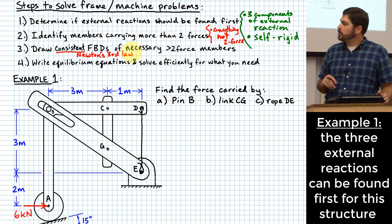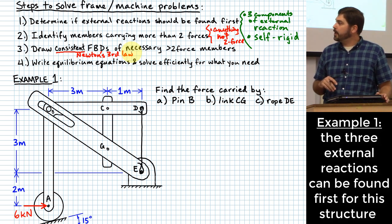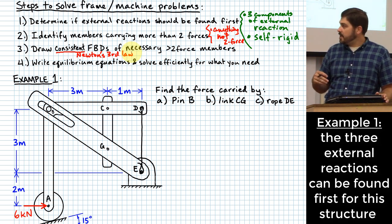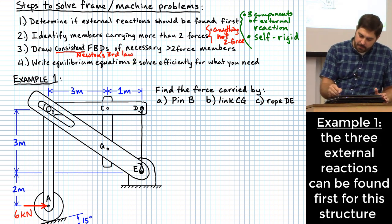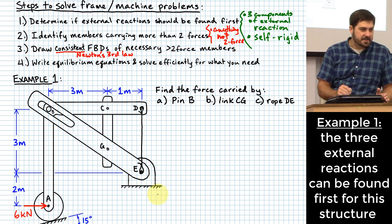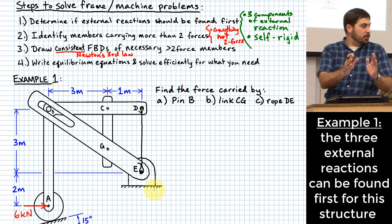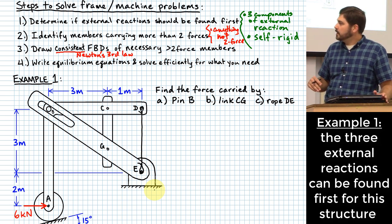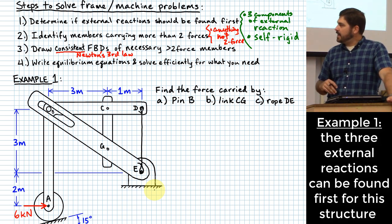Let's look at the diagram and count external reactions. Pin E has some external reactions. Pin A interfaces with an external support — those hashed lines with hashes underneath mean that surface is fixed. So external reactions occur wherever we see those hash marks, and we have some at E and some at A. The interface at E is a pin resisting motion both horizontally and vertically, so it has two components of reaction.